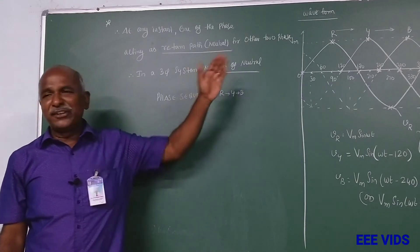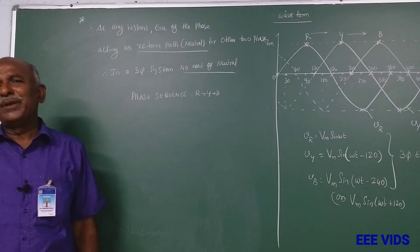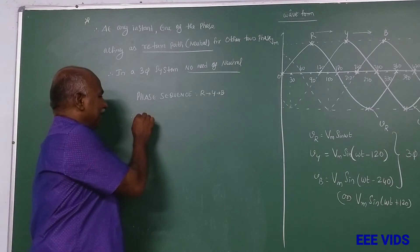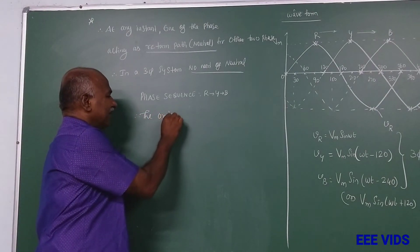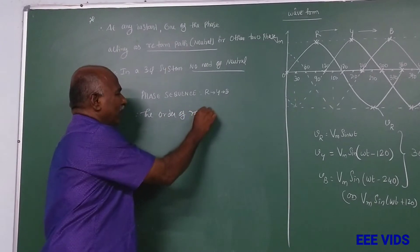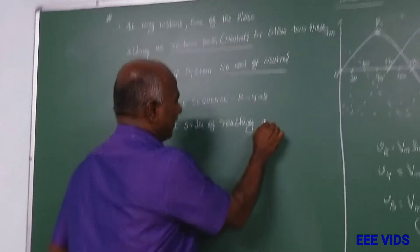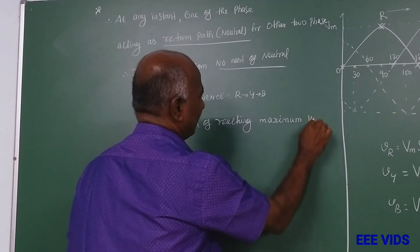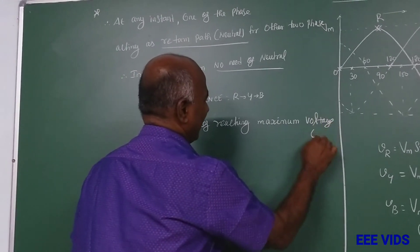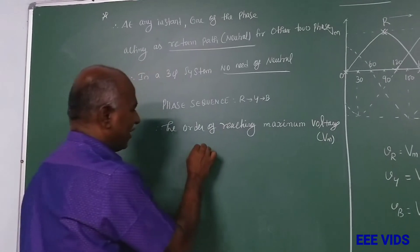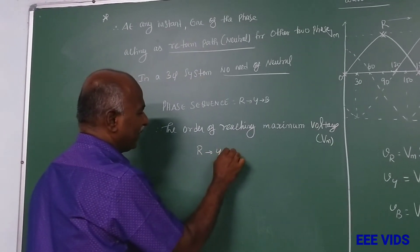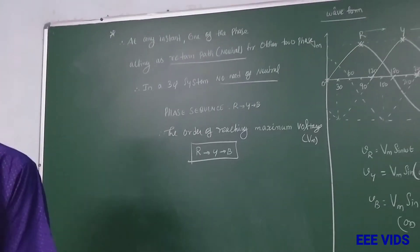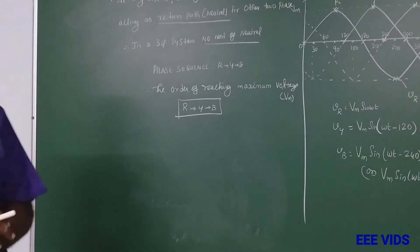R phase reaches maximum first. So first R phase reaches maximum, then Y phase, then B phase — that is the phase sequence. The order in which maximum voltage is reached: Vm maximum voltage, R phase first, then Y, then B.